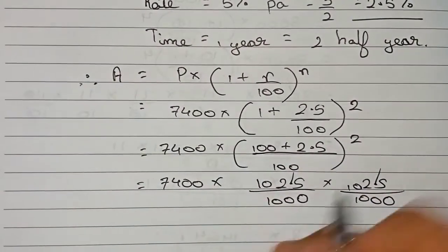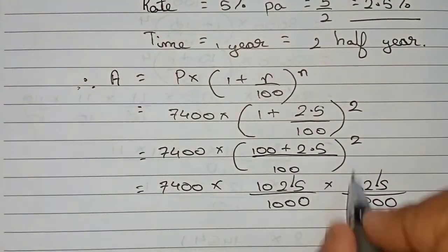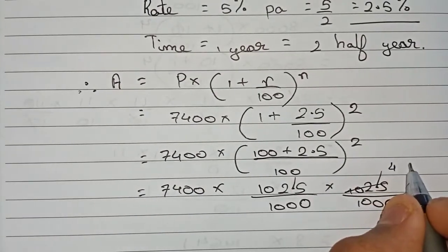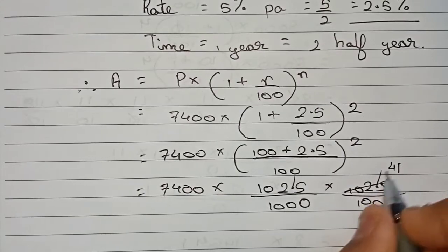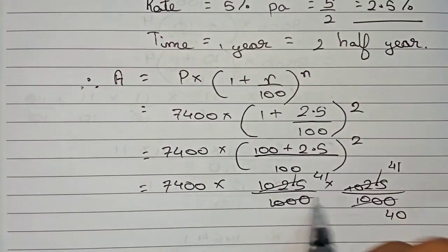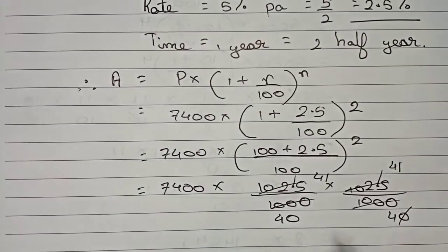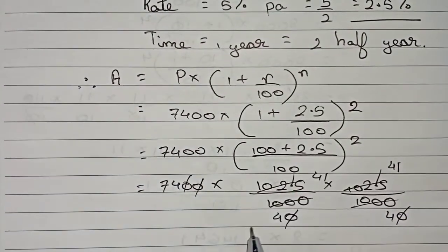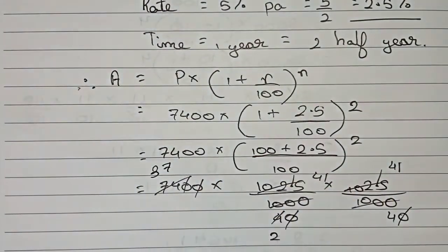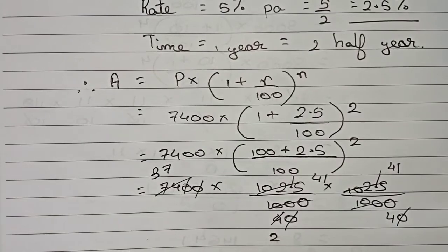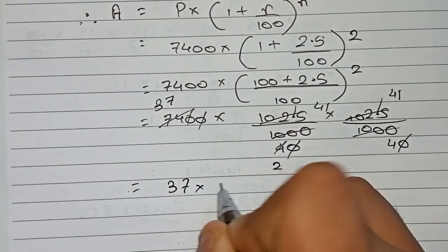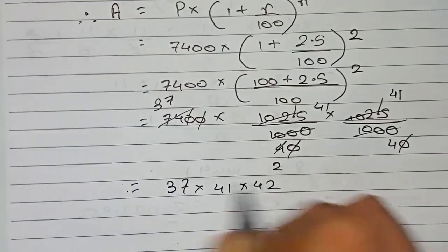Now cancel these numbers. First divide by 25: it becomes 41/40 on both sides. Then cancel zeros. Now divide by 2: it becomes 37. So we get 37 × 41 × 41 divided by 2 × 4.